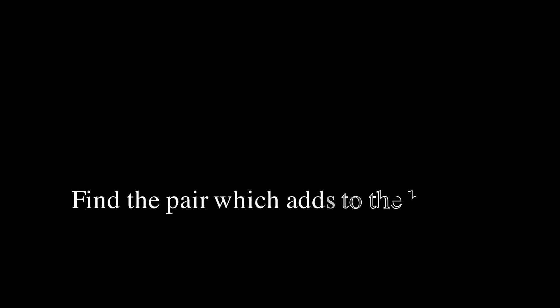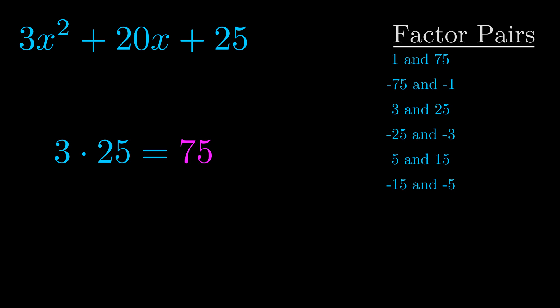The b value is the coefficient on the x term. That's the middle term, the one that we haven't done anything with yet. And really this is the only factor pair that we need.